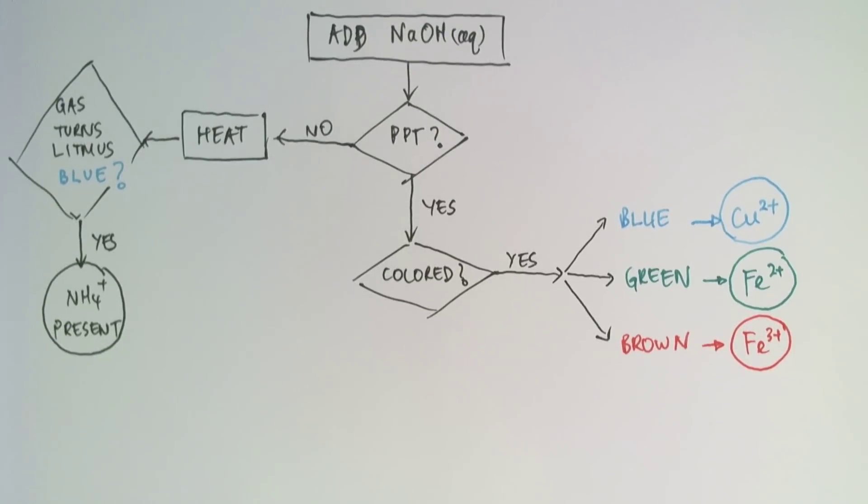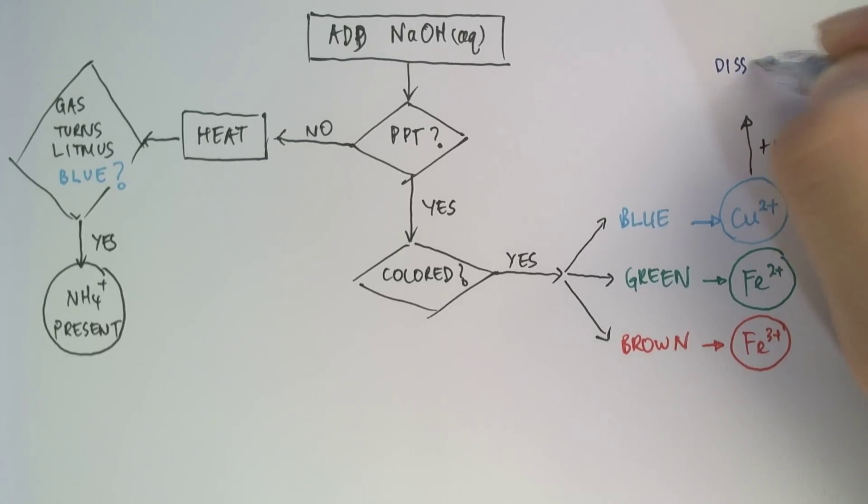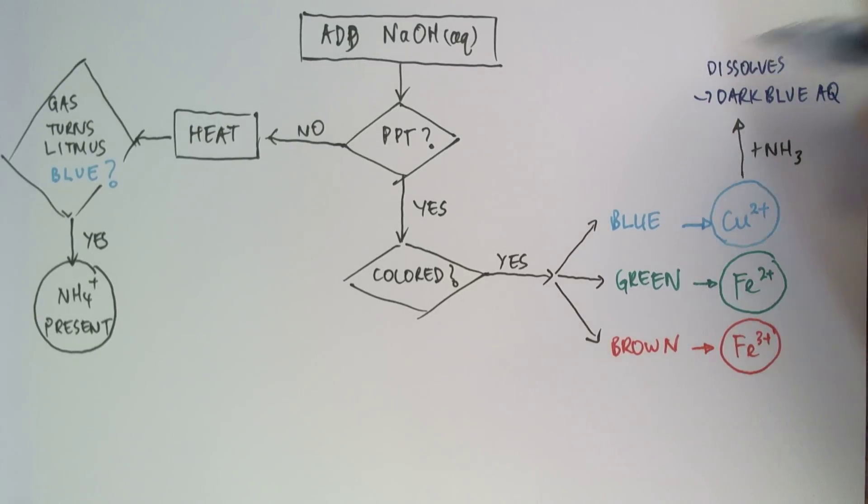Now, for the case of copper, we can do an additional test, which is we can add to this resulting solution, ammonia. And if it dissolves again, to form a dark blue solution, then that confirms the presence of copper ions.